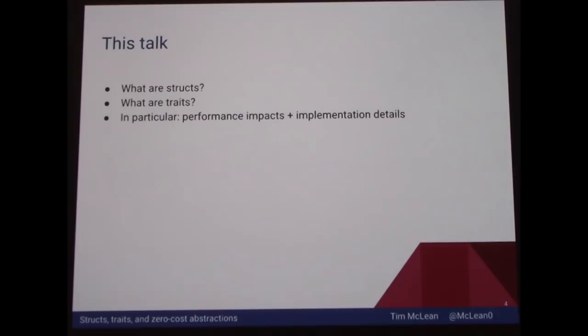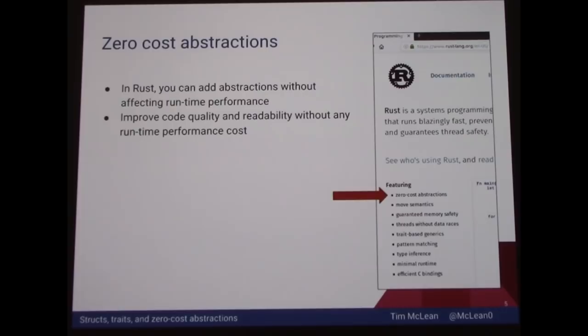In this talk I'm going to be talking about primarily two things: structs and traits. In particular, I'm going to talk about the performance aspects — where there's overhead, where there's no overhead, and the performance trade-offs that can occur. I'm going to be using this term a lot: zero-cost abstractions. You can tell Rust cares a lot about this because it's the first item in the features list on their homepage. Zero-cost abstraction means you can add structure to your code — new concepts or abstractions — but at runtime there's no actual performance hit, no overhead.